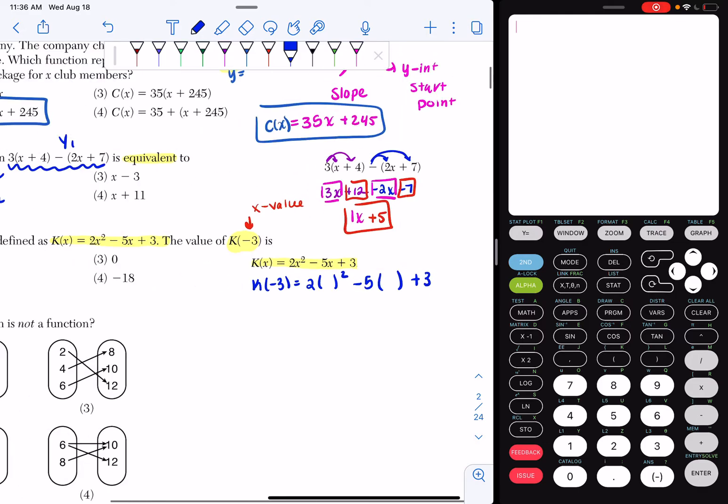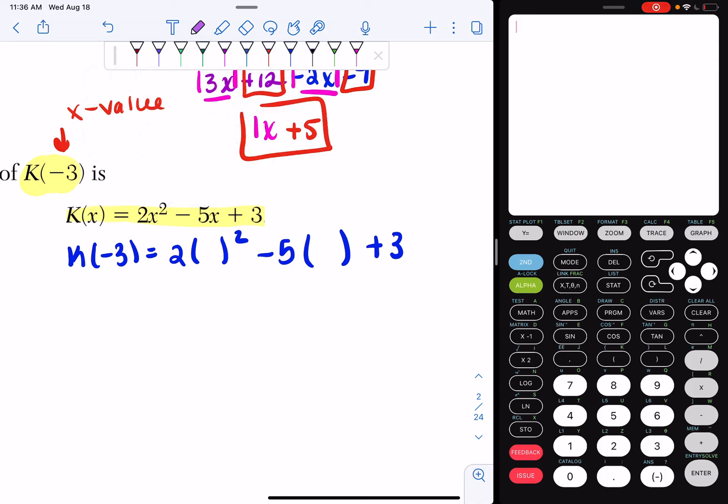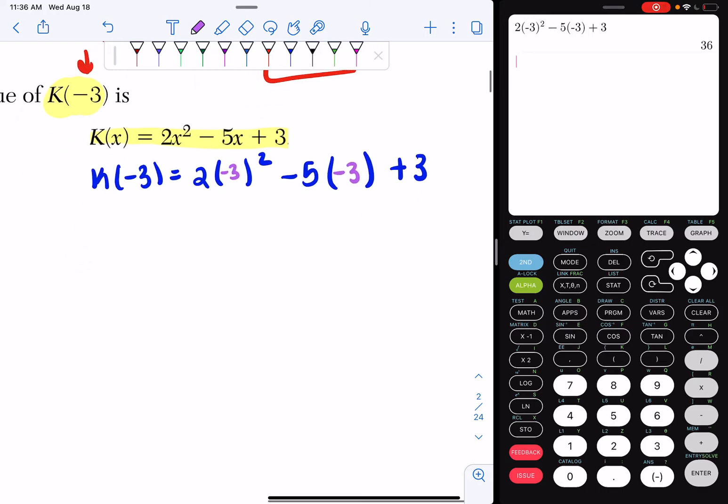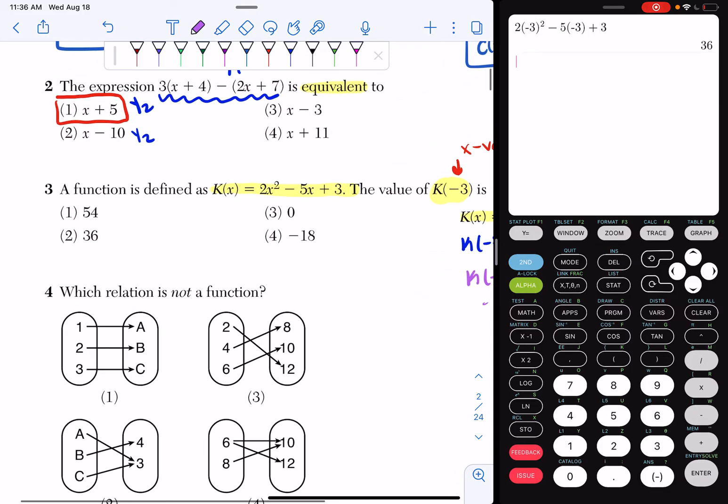Everywhere I have a parenthesis, I'm going to substitute a negative 3. Now you just type that into your calculator. So I'm going to do 2 times negative 3 squared minus 5 times negative 3 plus 3. When I type it in, I get 36. So I can say K of negative 3 equals 36. If I look at my answer choices, it's going to be choice 2.